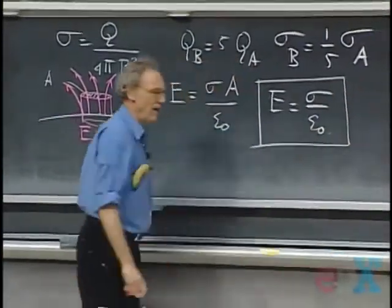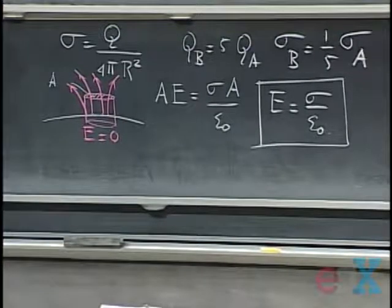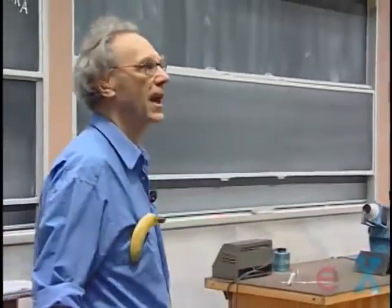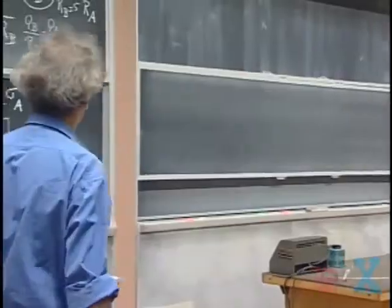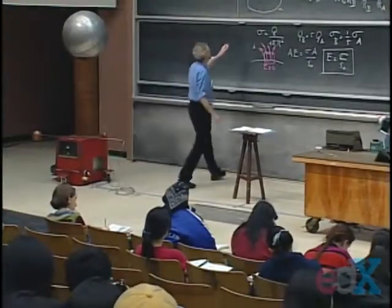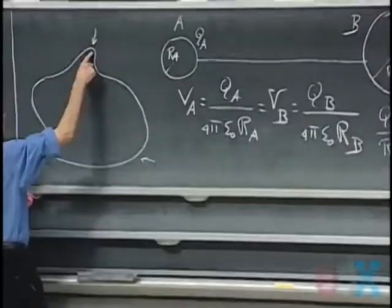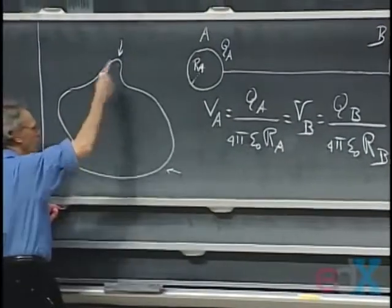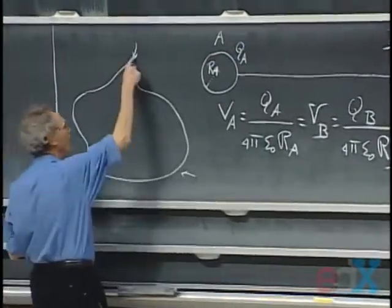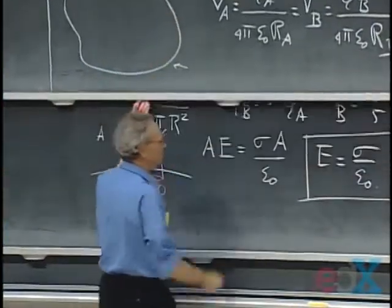So whenever you have a conductor, if you know the local surface charge density, you always know the local electric field. Since the surface charge density is highest at regions of high curvature, even though the whole conductor is equipotential, the electric field will also be higher at those regions.